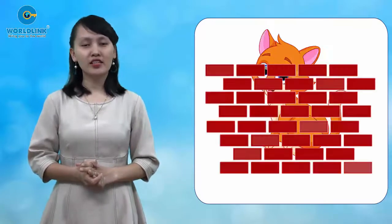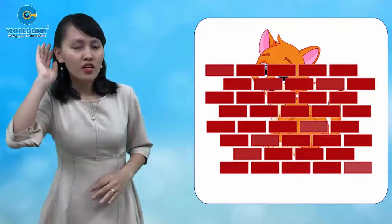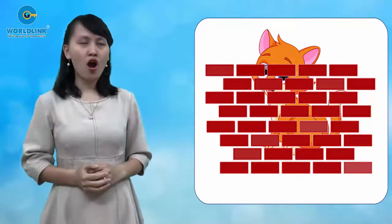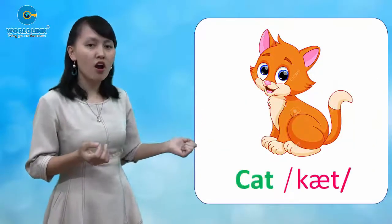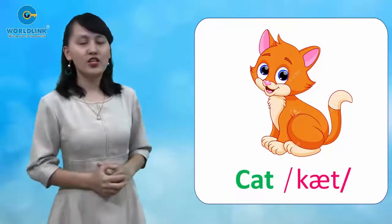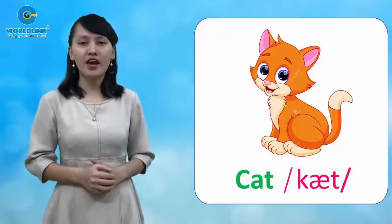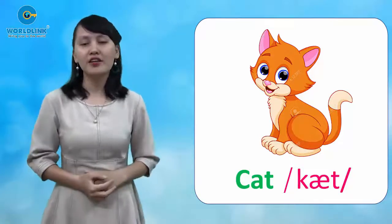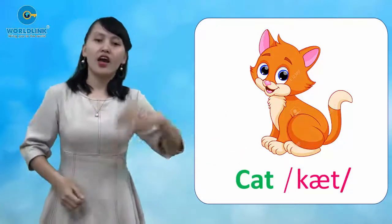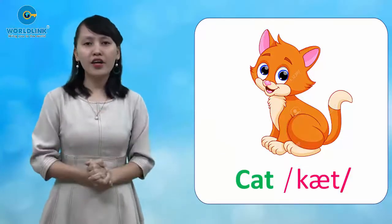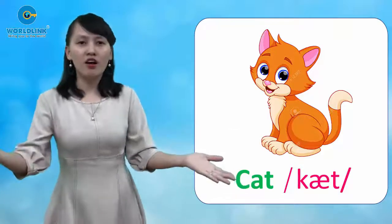The first one is... what is here? Meow, meow! Wow, what animal is it? It's a cat. You say C... C... cat. Again, C... C... a cat. It's a cat.